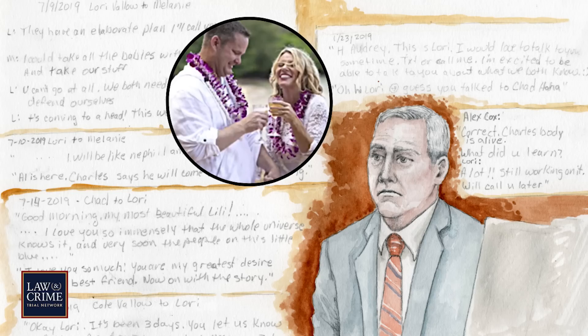We're seeing a text communication July 9th, 2019, between Lori Vallow and Melanie Boutreau. Could you read those into the record? Line 3135 from Lori Vallow to Melanie Boutreau: 'They have an elaborate plan. I'll call you soon.' Line 3134 from Melanie Boutreau to Lori Vallow: 'I could take all the babies with and drive and take our stuff.' Line 3133 from Lori Vallow to Melanie Boutreau: 'You can't go at all. We both need to stay here to defend ourselves.' Line 3132 from Lori Vallow to Melanie Boutreau: 'It's coming to a head. This week will change everything.' Why did you include that particular series of texts?